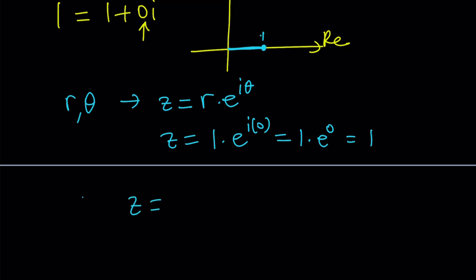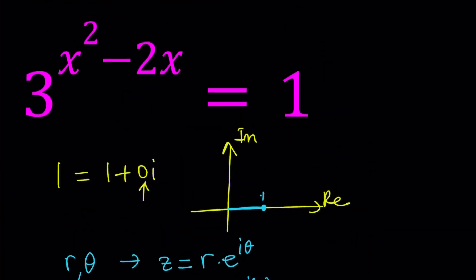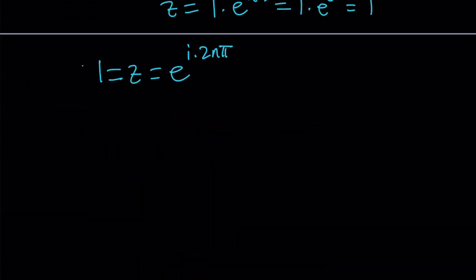We're going to write the z as e to the power i times 2n pi. Now, this is 1, by the way. So that's going to be our number on the right-hand side. So let's go ahead and write our equation again. 3 to the power x squared minus 2x equals 1, which is e to the power i times 2n pi.